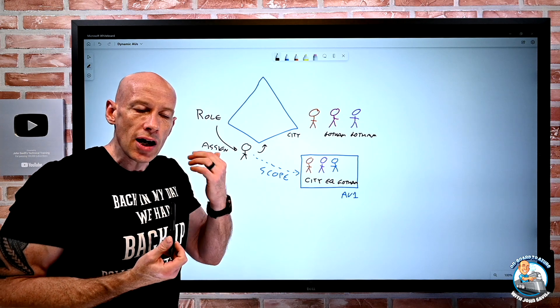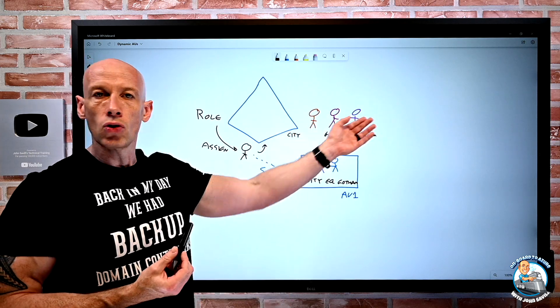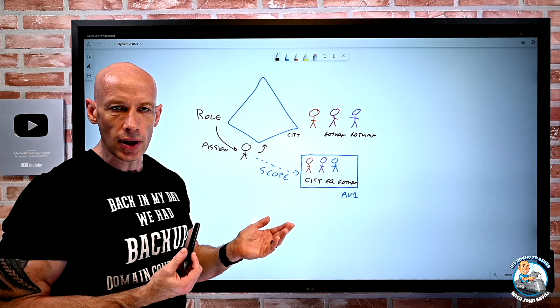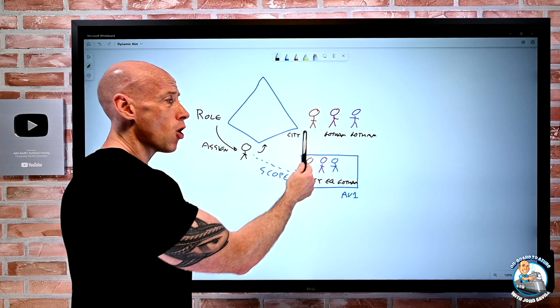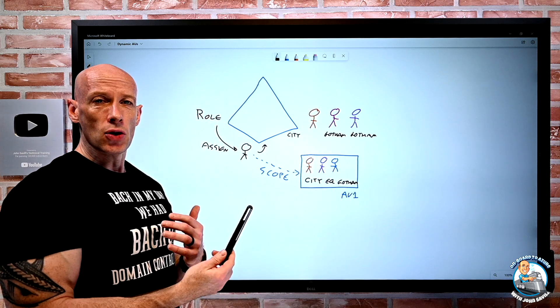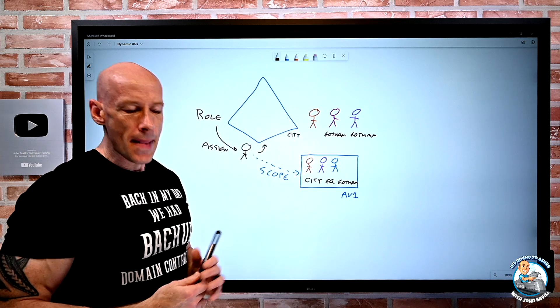The whole point now is I don't have to be manually assigning users or devices into the administrative unit. I can just create these rules. And remember, I can have multiple AUs and the same object can be in multiple administrative units. This is not a location. It's kind of like a membership to that.